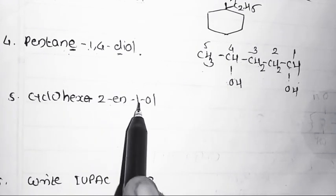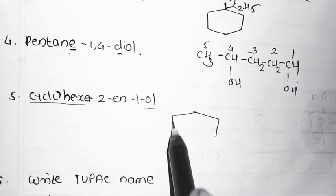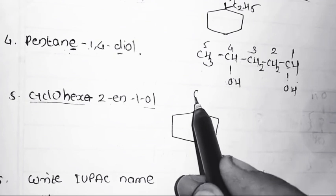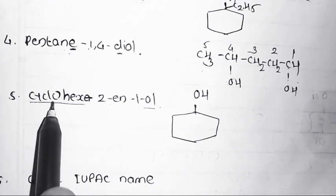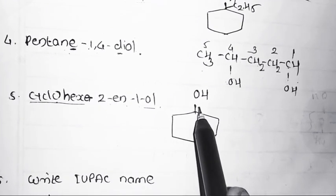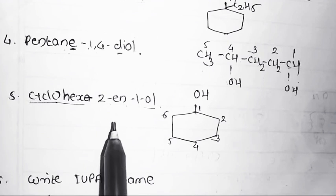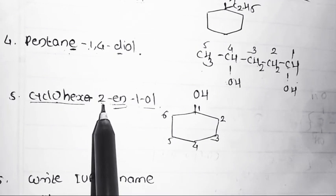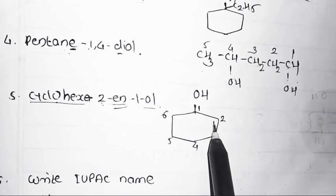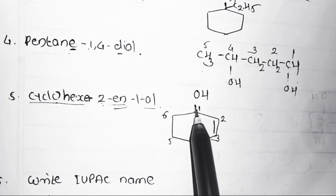Fifth example: cyclohex-2-en-1-ol. This is a cyclic ring — cyclohexanol with an OH at position 1. Numbering: 1, 2, 3, 4, 5, 6. The suffix 'en' means one double bond at position 2, so there is a double bond between carbons 2 and 3. This gives cyclohex-2-en-1-ol.